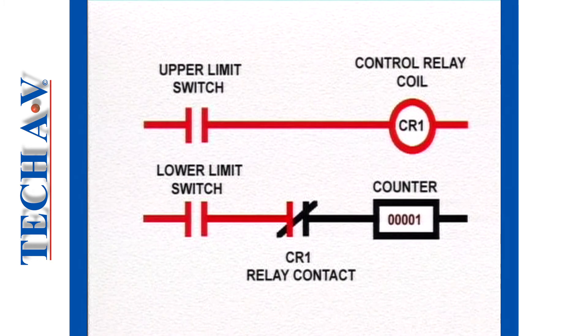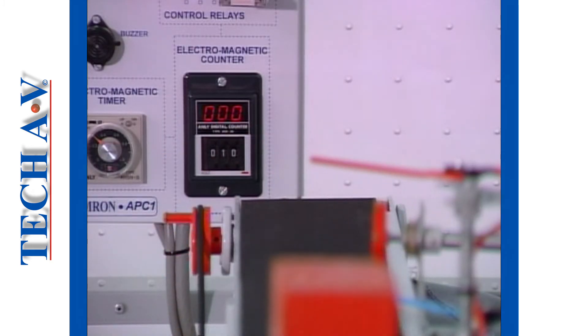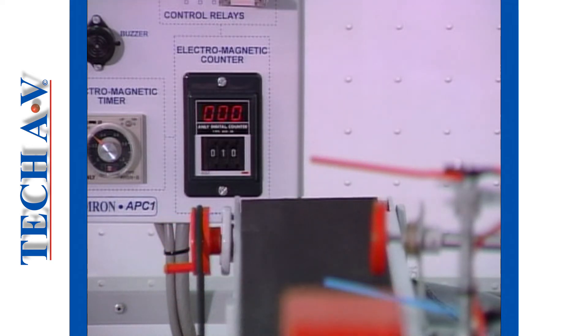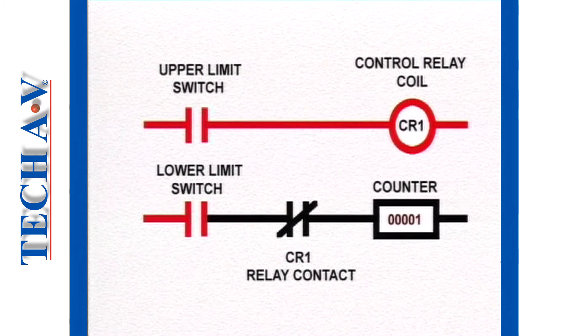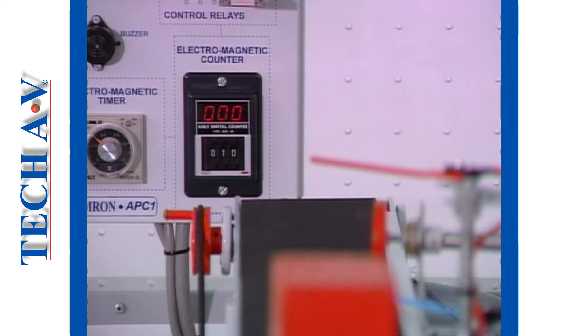We can explain the power flow like this. Although the counter received a yes or on signal from the lower limit switch, it also received a no or off message from the control relay contacts. And since in a series circuit, all inputs must be on to pass power, the counter will not respond to the tall block.